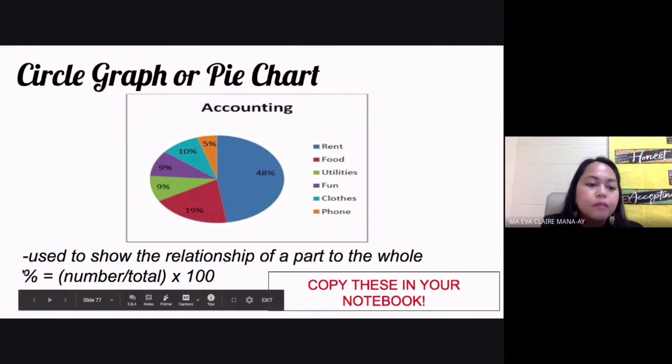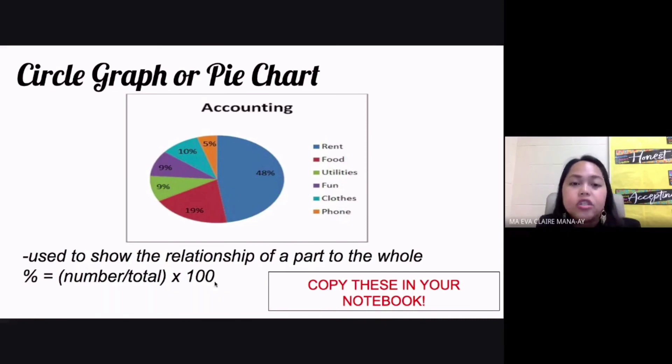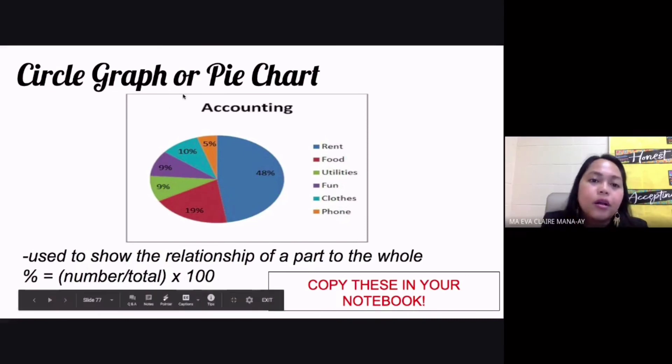To compute the percentage, you need to get the number divided by the total, and the quotient you multiply by 100. So the number divided by the total, the quotient of this you multiply by 100, and that's how you get the percentage. Your circle graph or pie chart is used to show the relationship of a part to the whole.